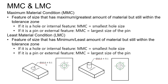For a shaft, MMC is the maximum diameter; for a hole, MMC is the minimum diameter. Conversely, LMC — Least Material Condition — is the feature of size at which the minimum or least amount of material is present, still within the tolerance zone. For a hole or internal feature, LMC is its maximum diameter; for a pin or external feature, LMC is its minimum diameter.